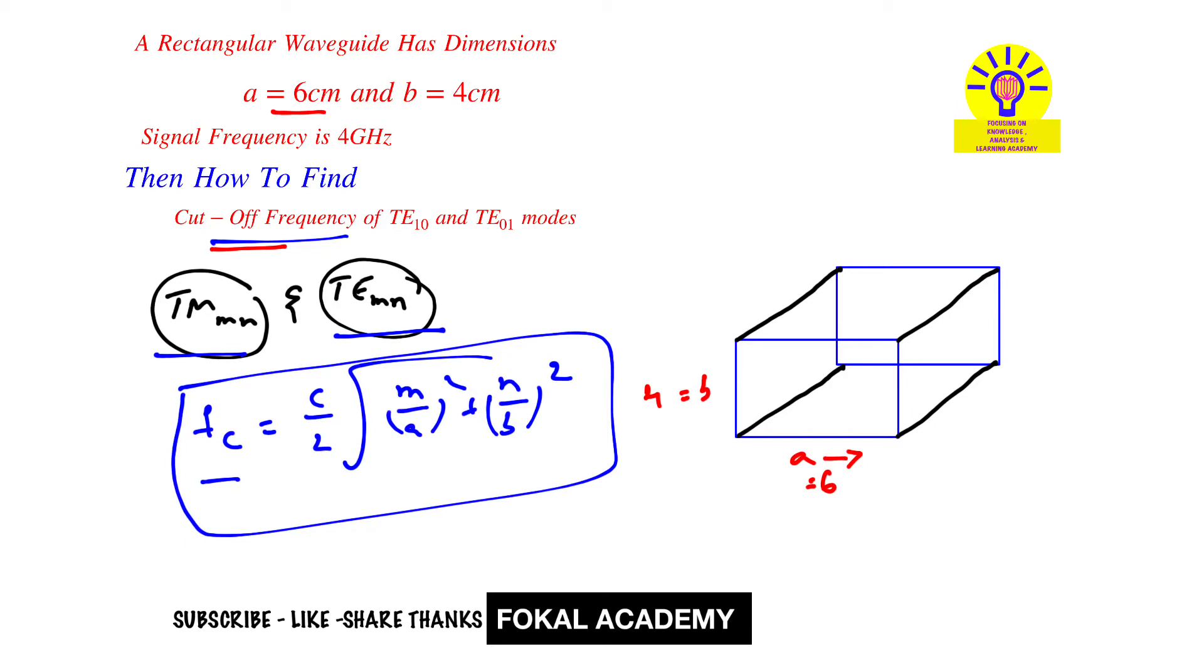According to the problem, we want TE10 and TE01. For TE10 mode, m = 1 and n = 0. Substituting in this equation, we get fc = c/2√... where c is the velocity of light, 3×10⁸, divided by 2, times the square root of: